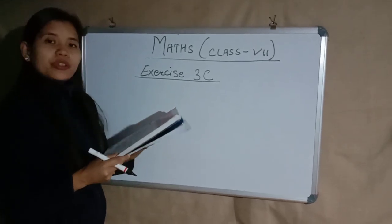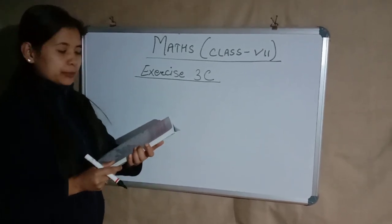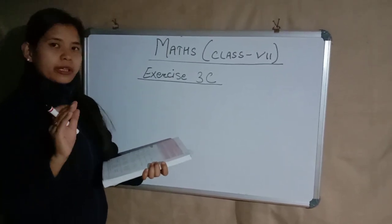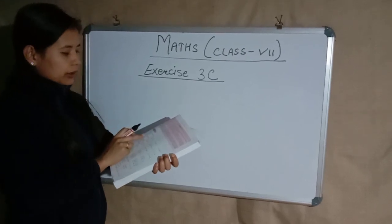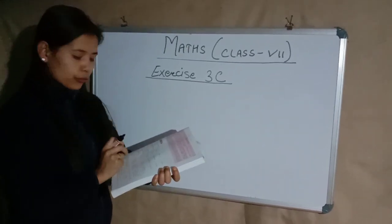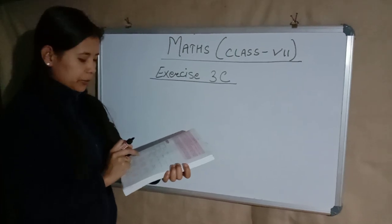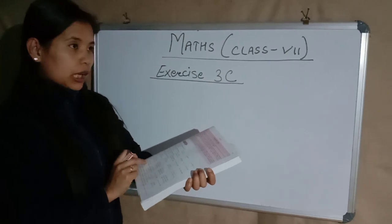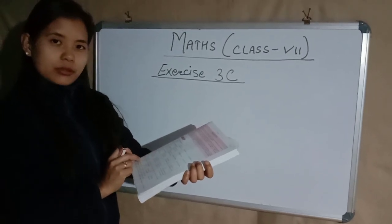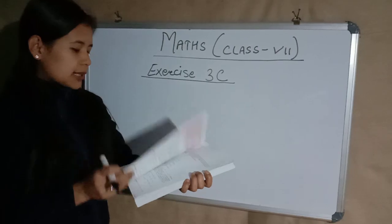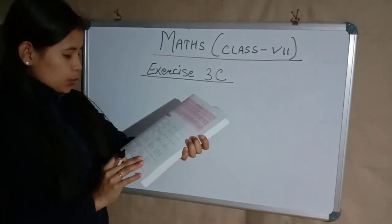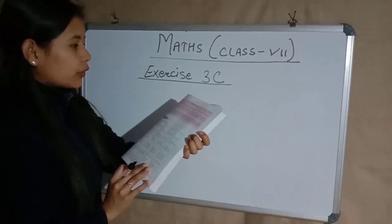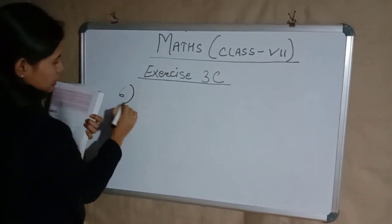Hi guys, so in the previous video we learned how to multiply decimals — there were three categories and we dealt with all of them. Based on that, I think you all have done questions 1, 2, 4, and 5. Question 5 is also of the same kind. I'll be doing question number 6 for you and discussing a few questions so that we will be done with Exercise 3C.